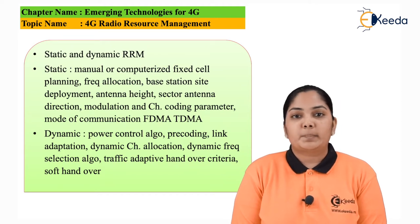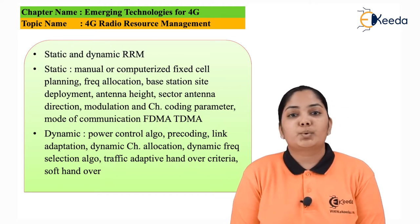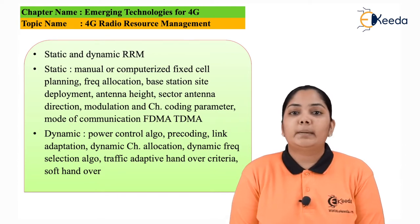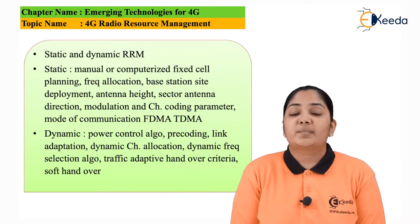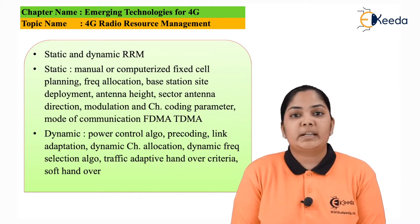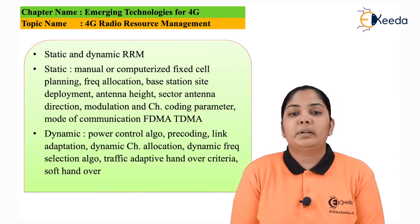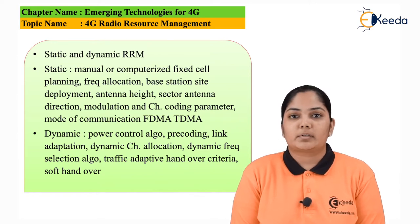Dynamic radio resource management provides dynamic parameters that are constantly changing. For example, transmit power is constantly changing as a user moves from one place to another. Frequency allocation is also dynamic — at any time and any point a user can initiate a call, requiring frequency allocation. All such time-varying parameters fall under dynamic radio resource management.